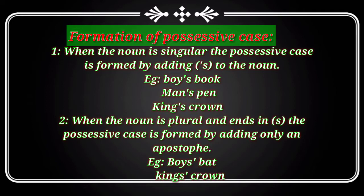For example: boys' bat, kings' crown. You place the apostrophe after the last S. If you add another S after the existing S, that is wrong. The correct form is just apostrophe after the S — kings' crown.